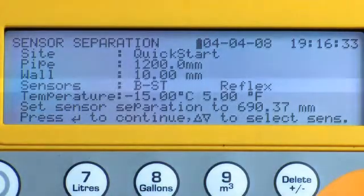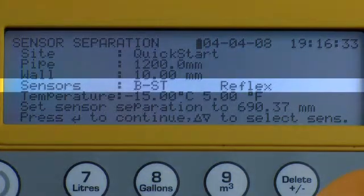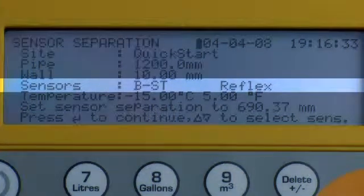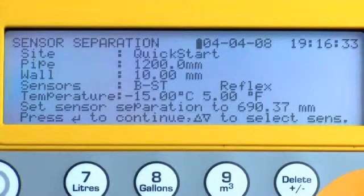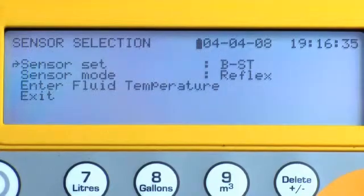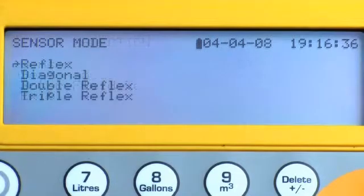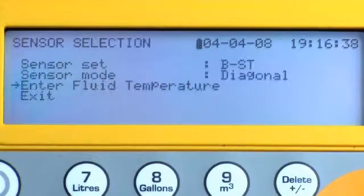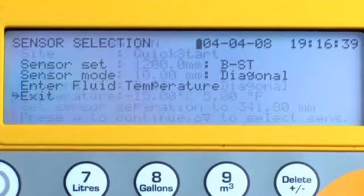The mode of operation just demonstrated is called reflex mode. On large pipes and potentially difficult applications, we may need to set up the sensors in diagonal mode to improve signal levels. For diagonal mode operation, press scroll and select sensor mode. Press enter and select diagonal mode. Scroll down to exit and press enter.